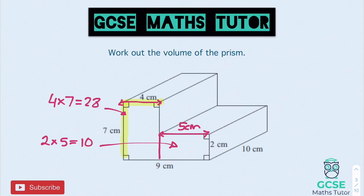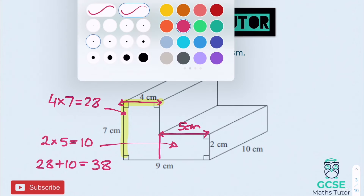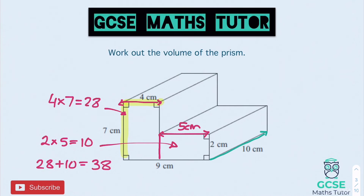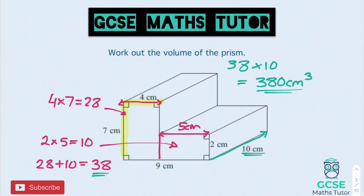Combining the two areas: 28 plus 10 gives a total cross-section area of 38. The depth of the shape is 10, so to get the volume we take 38 — the area of the cross section — and multiply it by 10. That gives us a total volume of 380 centimetres cubed. And there's our final volume for that question.